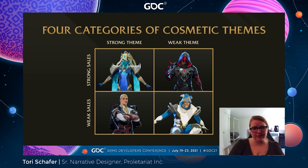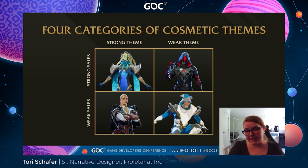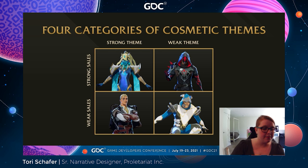When giving narrative direction to cosmetics, the most important aspect is the theme. This can be anything from cutesy witch to evil zombie. Here I split our cosmetics into four categories: strong theme and strong sales, represented by our outfit Starweaver in the upper left corner; weak theme and strong sales, represented by Brooding Corvid in the upper right; weak sales and strong theme, represented by Troubadour Enchanter on the bottom left; and finally, weak sales and weak theme, represented by Valiant Falter on the lower right.